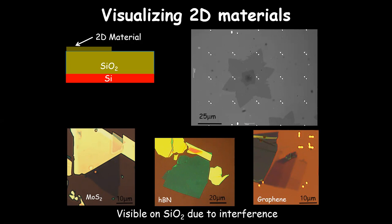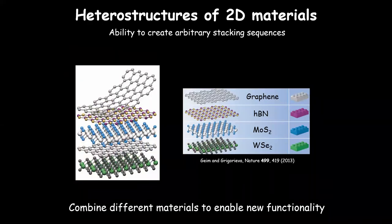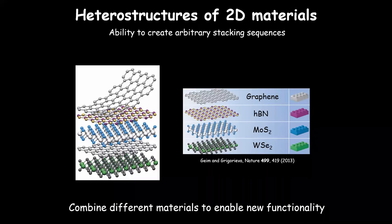We've now identified the different materials and how thick they are. The last step in making heterostructures is assembly — using them like Lego pieces. We have all the different 2D materials. Because they have van der Waals stacking between layers, we can arbitrarily stack one material on top of another without worrying about lattice mismatches or compatibility. We can just put anything on top of any other material.